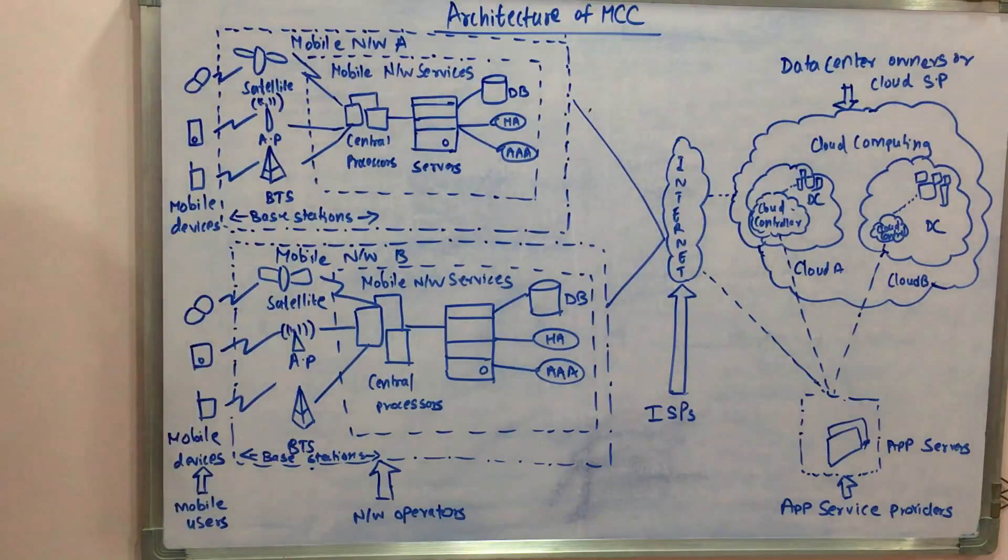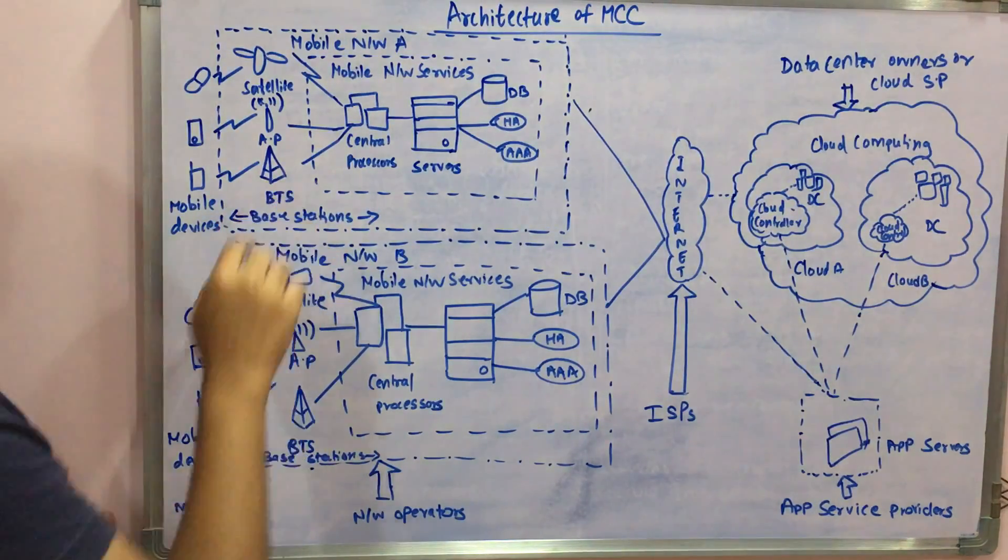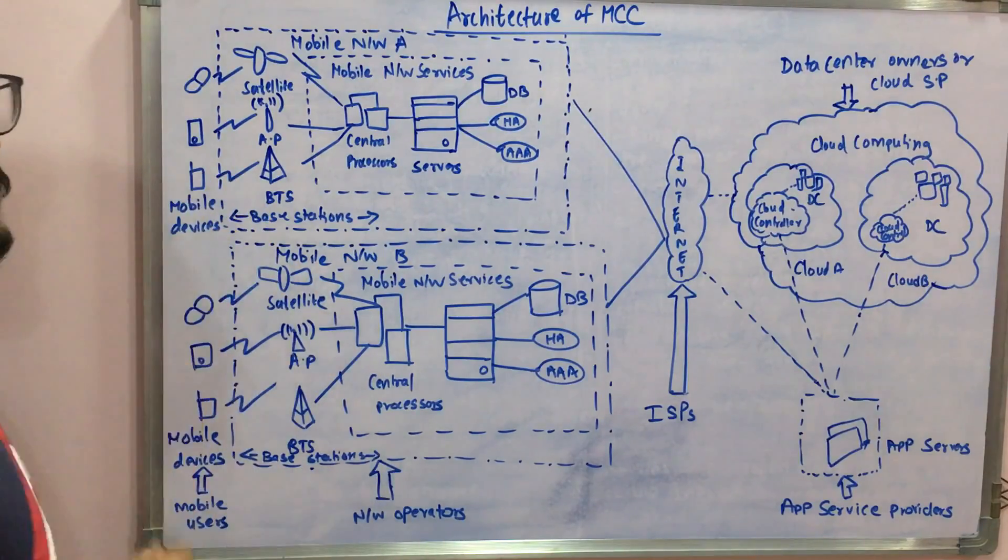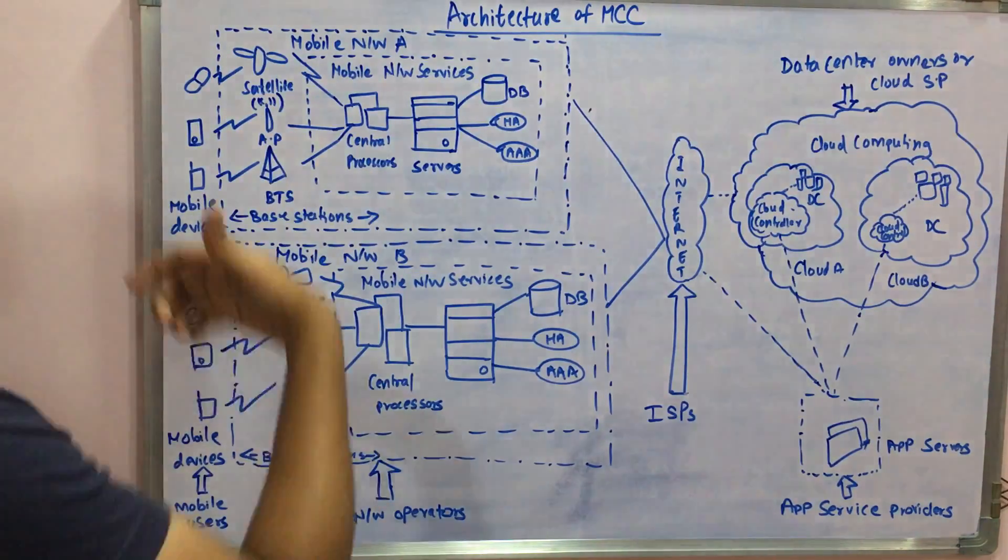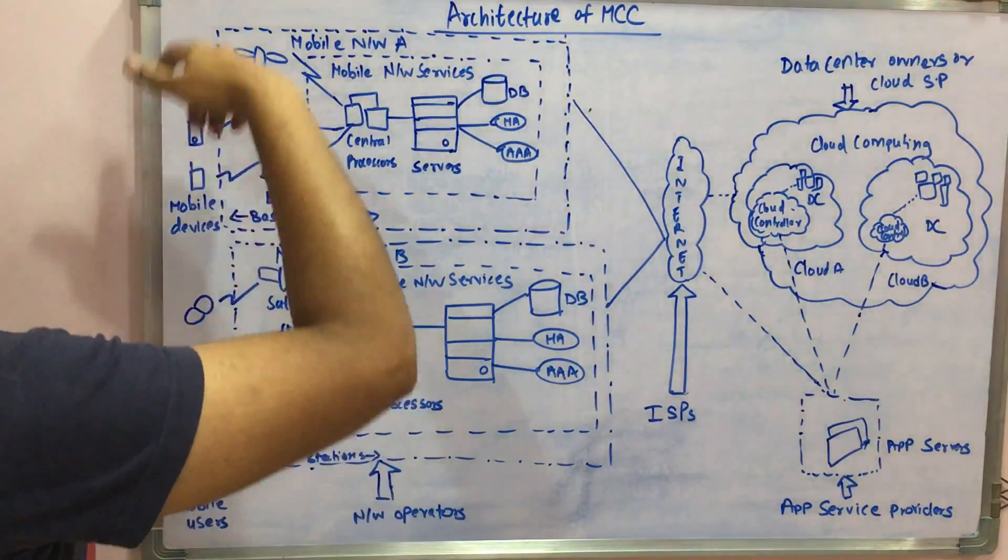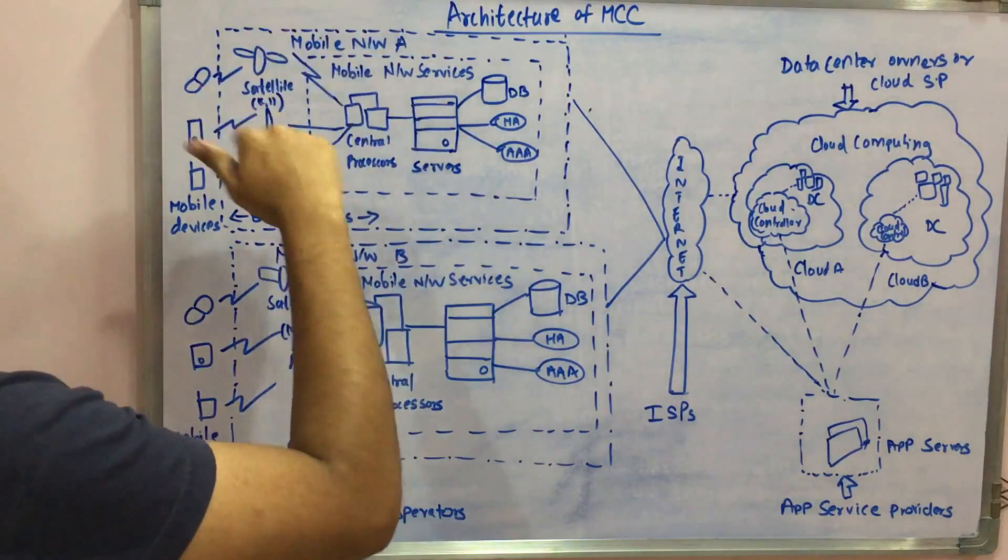These base stations could be BTS, which stands for base transceiver stations, or AP which is access points, or satellites. These just connect to the network services.